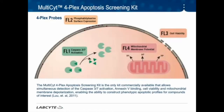IntelliCyte has developed the no-wash MultiSite four-plex apoptosis screening kit that allows simultaneous detection of Caspase-3/7 activation in FL1, annexin 5 binding in FL2, cell viability in FL3, and mitochondrial membrane polarization in FL4 — all from a single sample. Cell count is an inherent capability of the platform and may be useful for identifying overtly toxic treatments. The MultiSite four-plex apoptosis screening kit is the only kit commercially available that allows simultaneous detection of these four endpoints, enabling the construction of phenotypic apoptotic profiles for compounds of interest.